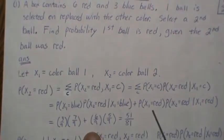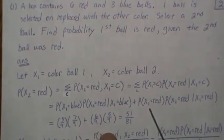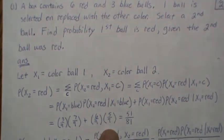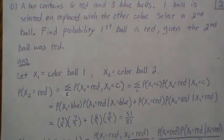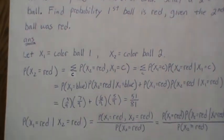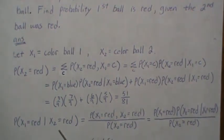Plus the probability that we pick a red one on the first ball, which is 6/9, times the probability of a red given that the first one was red, which is 5/9. Those add to 51 over 81.